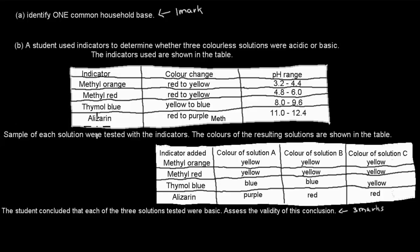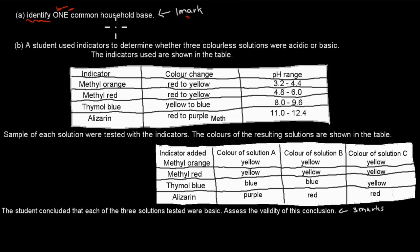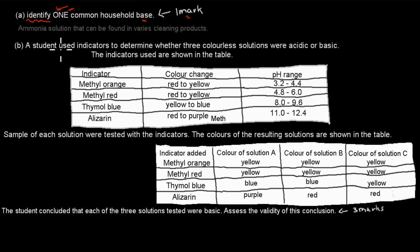Welcome back. For the very first one, it's relatively straightforward — it asks you to identify just one. Anything in capital letters, make sure you put focus on that, because that tells you exactly what to do. So just one, not more than one, and that's worth one mark. You have to name one common household substance that is also a base. I wrote: ammonia solution can be found in various cleaning products. Ammonia solution is a basic substance, so you get your one mark.